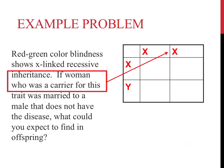The first clue to this problem suggests that the woman is a carrier for this trait. If you're a carrier, that means you don't have the trait but you can pass it on. This means that she is heterozygous for this trait. Since women have two X-chromosomes, this information should be placed on the top of the Punnett square.